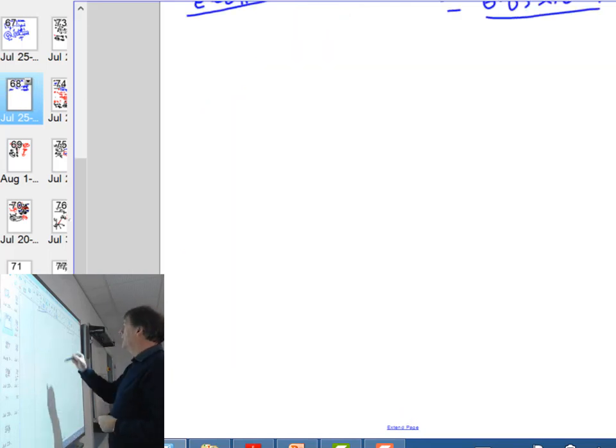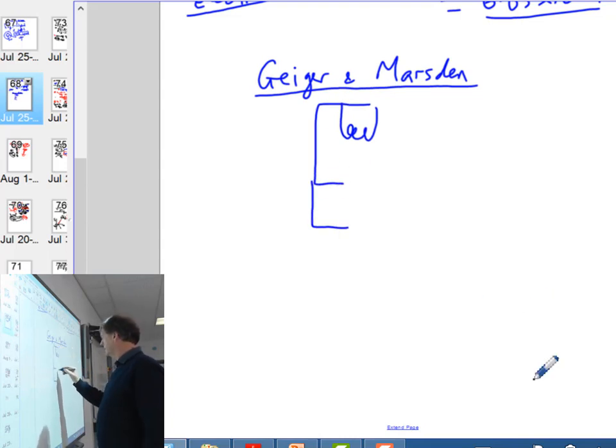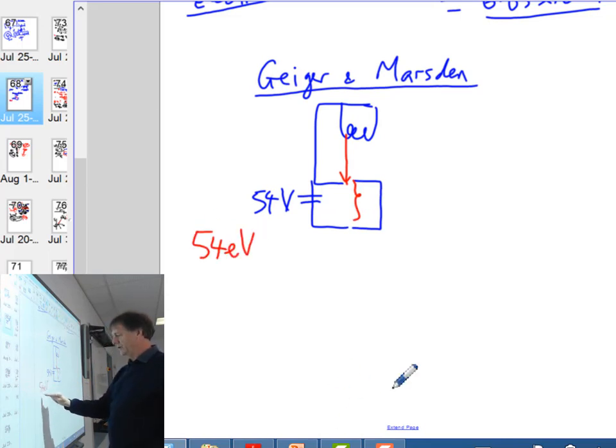So one of the experiments that was done was by Geiger and Marsden. So what you would do is you'd fire electrons through an electron gun at low voltage. So we use a filament there. We'd actually have some sort of potential difference going to a slit. And we put a potential difference through here of maybe only 54 volts. They actually played around with this voltage a lot, and this is the one they came up with to use. So 54 volts.